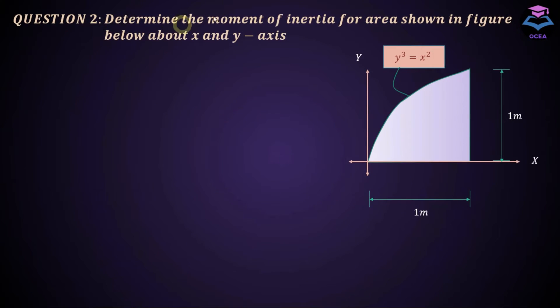Question number 2 says that determine the moment of inertia for area shown in figure below about x and y axis. As discussed previously, we are going to use the generalized equation. Ix is equal to integral y squared dA. And since we are calculating moment of inertia about x axis, we need to draw a strip parallel to it.